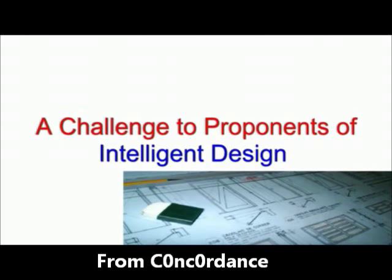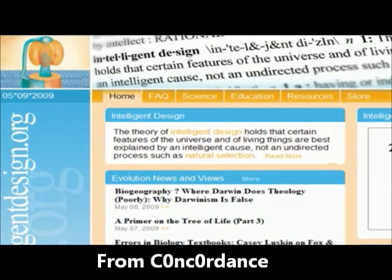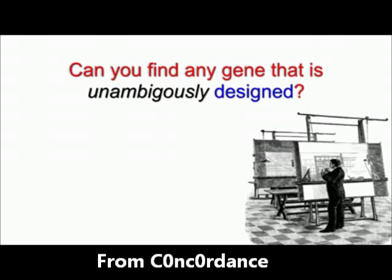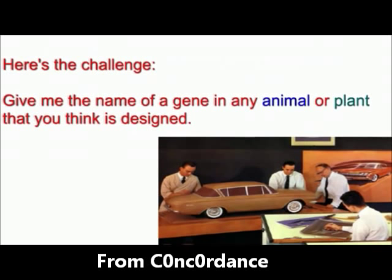Here's his challenge in his own words: 'A challenge to proponents of intelligent design — since the intelligent design movement is dedicated to the search for intentional design of living things, I think it's time to give it a little test. Can anyone out there locate a gene that is unambiguously designed? Give me the name of a gene in any animal or plant that you think is designed. No fair cheating — let's stick to sequences found in nature, not transgenics.'